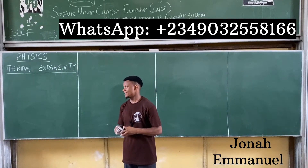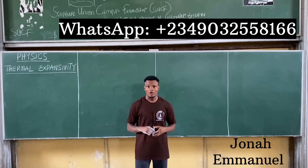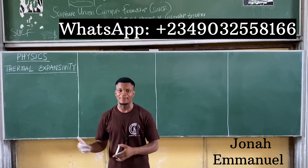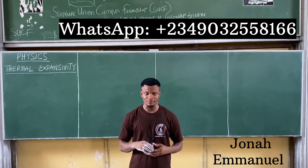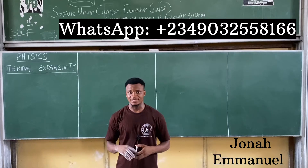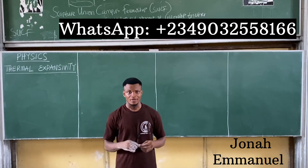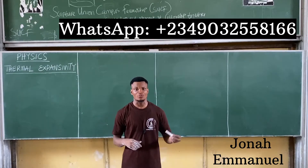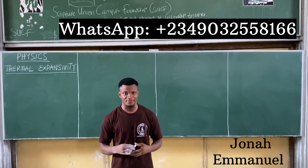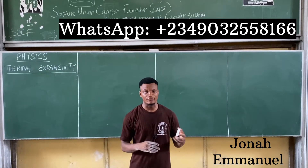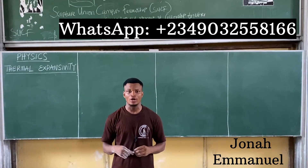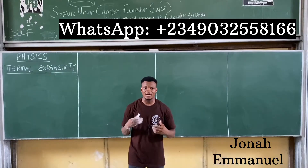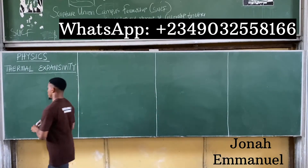Under thermal expansivity, we'll be dealing with three kinds of expansivity. The first one is linear expansivity. The second one is called the area or superficial expansivity. And the third one is called the volume, volumetric, or cubic expansivity. Let's take them one after the other.